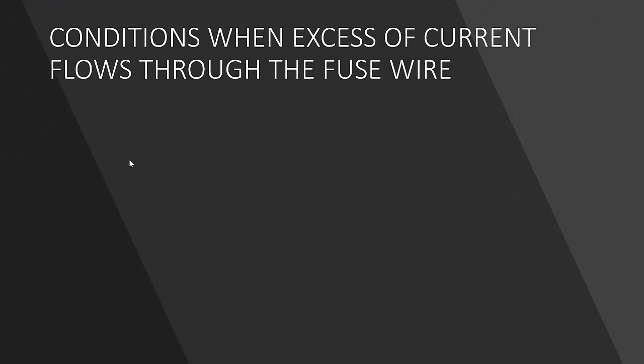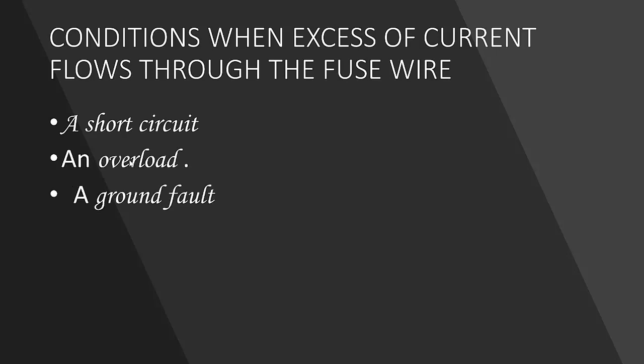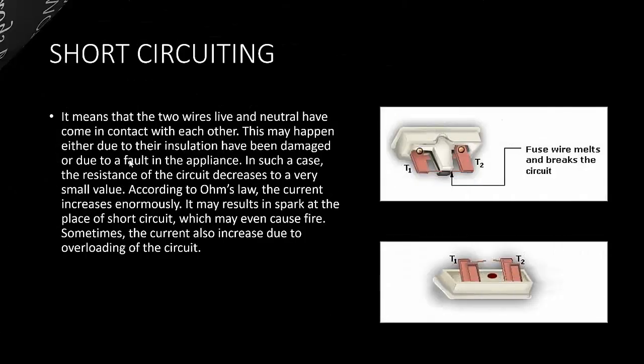Conditions when excess current flows through the fuse wire include: short circuit, overloading, ground fault, earth wire issues, lightning and thunderstorms, and device failures. Short circuiting means that two wires — live and neutral — come in contact with each other, either due to insulation damage or a fault in the appliance. In such a case, resistance decreases to a very small value, and according to V = IR, current increases enormously, which may result in a spark or even cause fire.